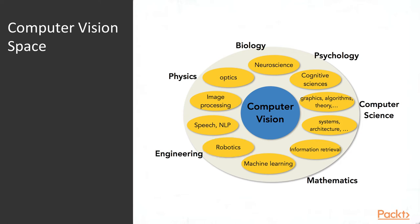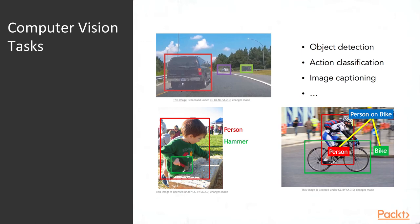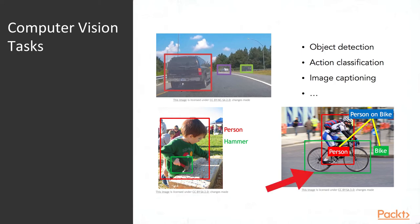As a brief summary, computer vision deals mostly with images — the main domain of application is how to extract information from visual content to get a visual understanding. For example, the computer vision tasks include object detection, action classification, and image captioning. In the examples shown, we can identify cars, a kid holding a hammer, and a person on a bike.